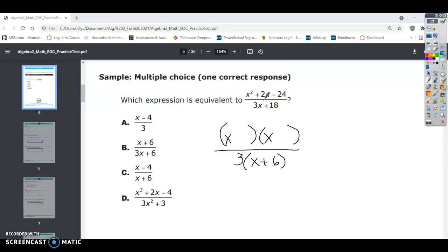Well, since we need 2 in the middle, we're going to use 4 and 6. So we're going to have 6 in one and 4 in the other.